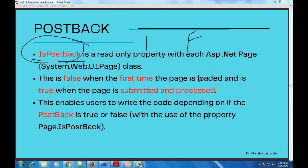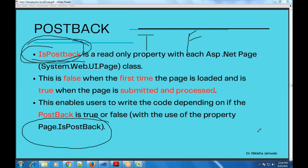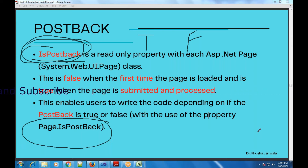Now, where does this property come from? As I told you, all the web pages you create are treated as a Page class. And if it is a Page class, we get its properties. In short, this IsPostBack property is a property of the Page class. Because obviously, we need to know about the page — whether it is a postback or not. We don't need to relate it to any other entity. So this property belongs to the Page class.